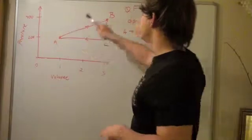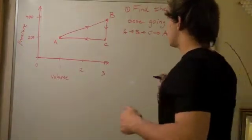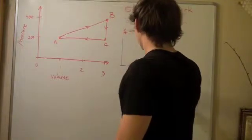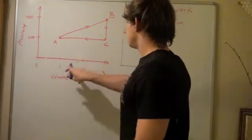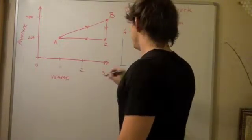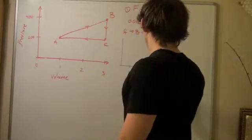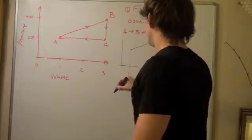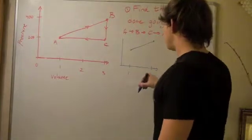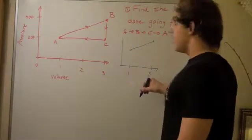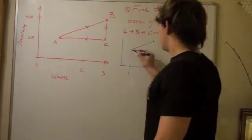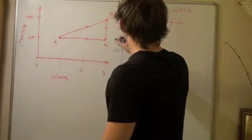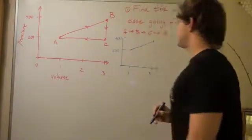So, let's find the work done from A to B. Let's redraw our graph, and so we go from 1 to 3, so 0.1 to 0.3. So, our change in volume is 2, and we go from 200 to 400.